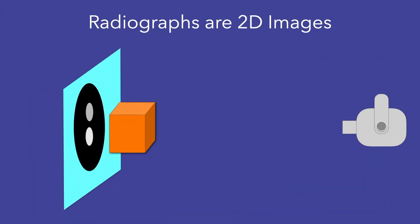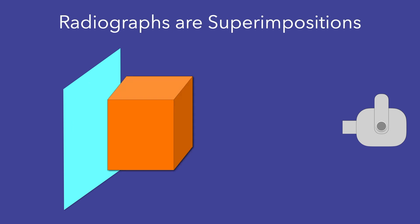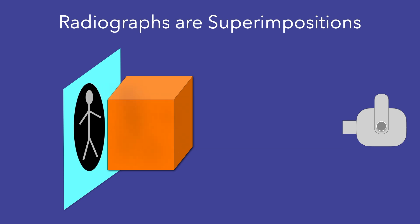Radiographs are two-dimensional objects. In this graphic, a cylinder and a sphere both cast circular shadows. In a radiograph, shadows of spatially separated objects are superimposed.